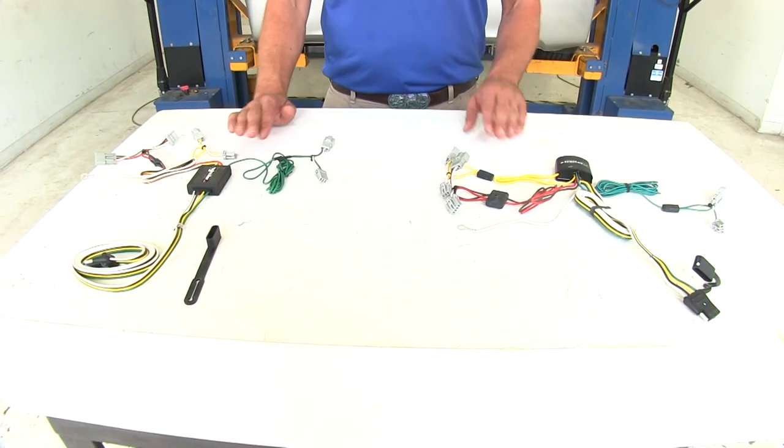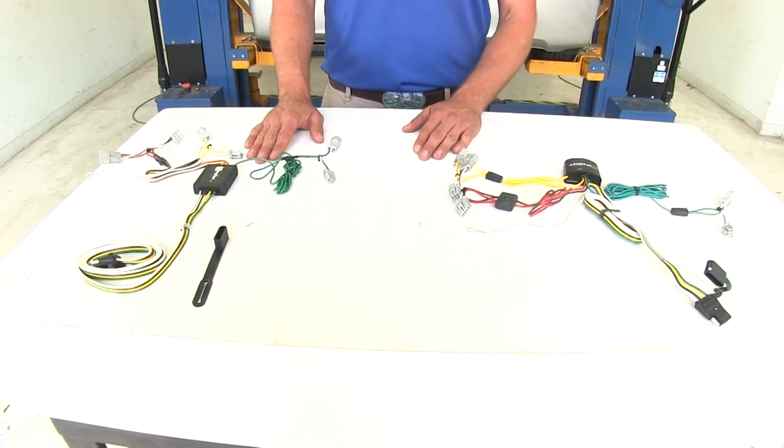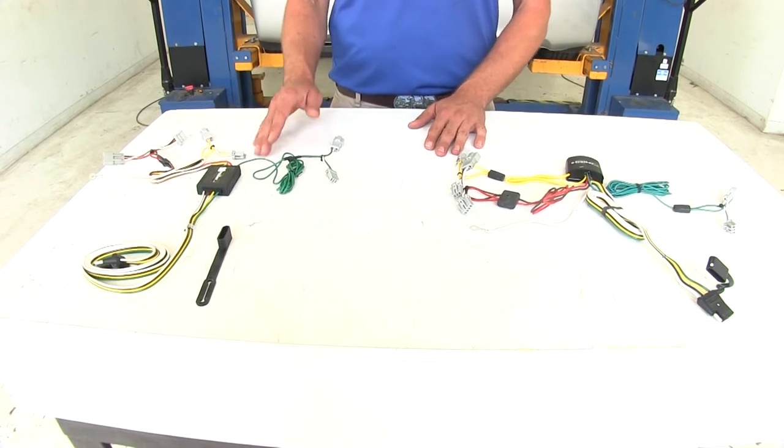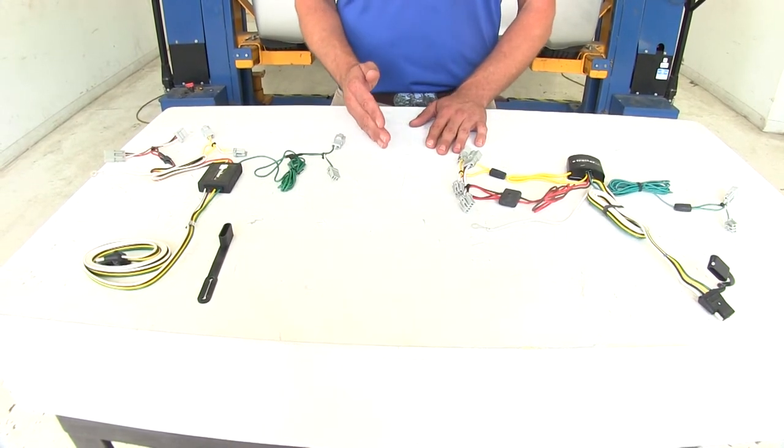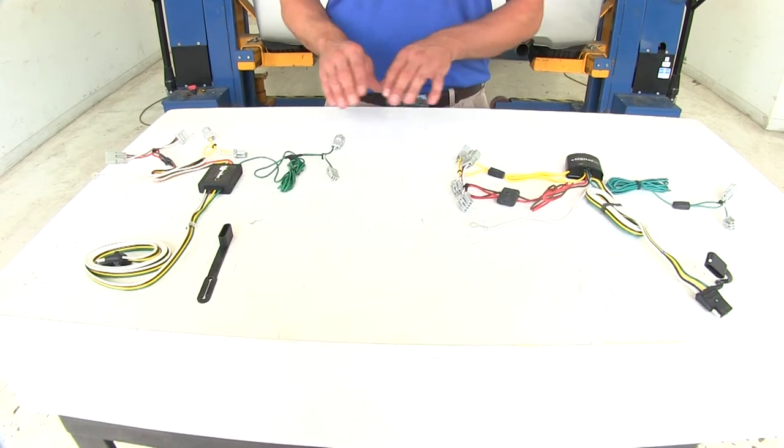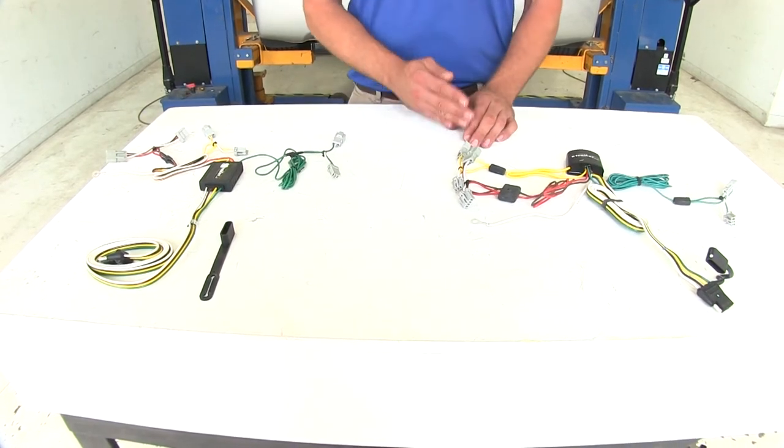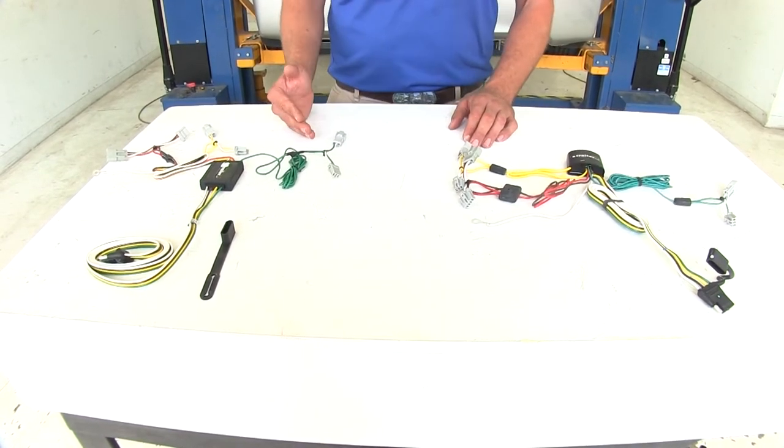The wiring harnesses we're talking about today are custom fit vehicle wiring harnesses. These are designed to work with the sedan and coupe Civic models that are non-SI and non-hybrid. If you have an SI or a hybrid model, you'll need one of the hard wire kits.